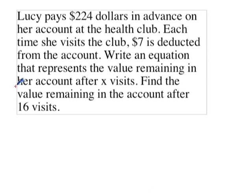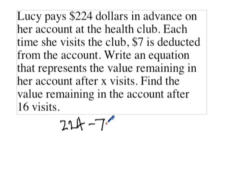So to write this equation, we start with $224. And then every time Lucy visits, we take away $7. The number of times she visits we're going to represent by X. Since every time you take away $7, 7 times X would represent the total number of dollars taken away in X visits. Then we put an equal sign and a Y, and we've got a nice linear equation that models the situation.